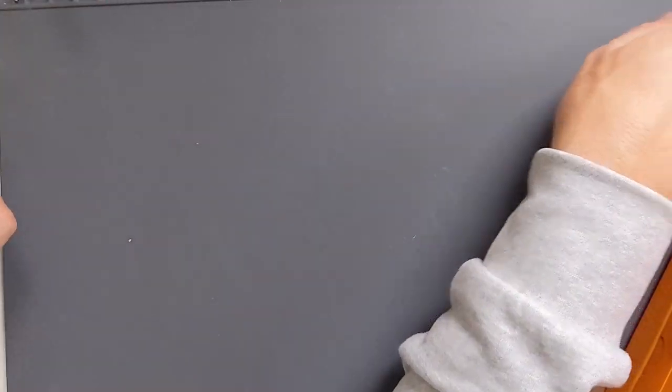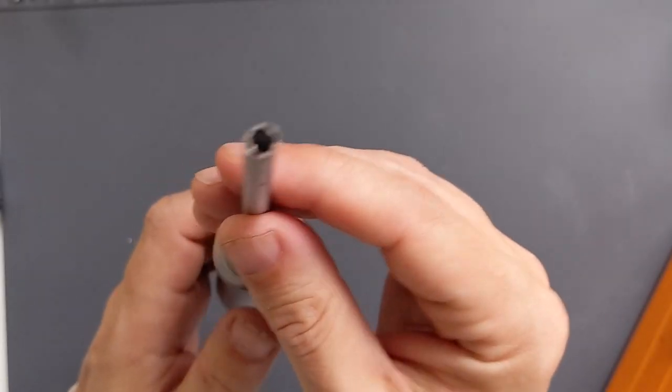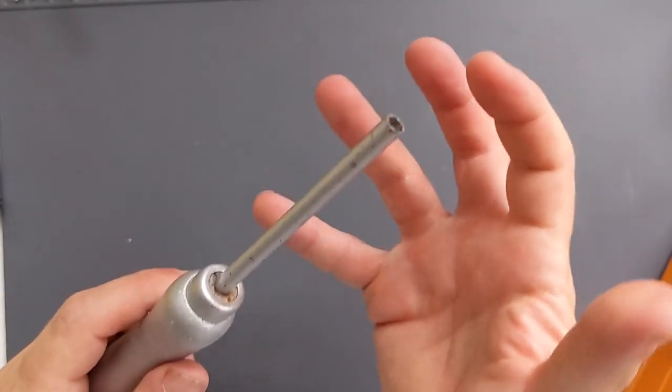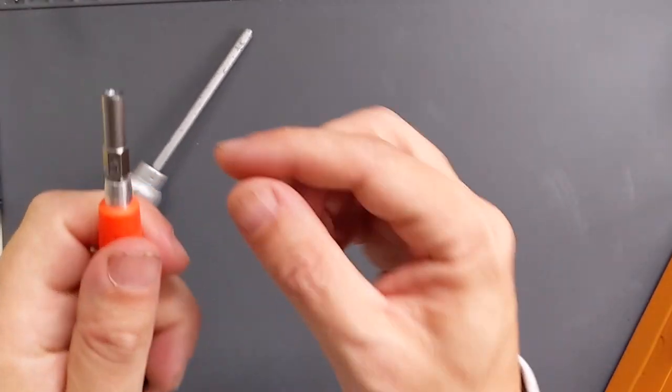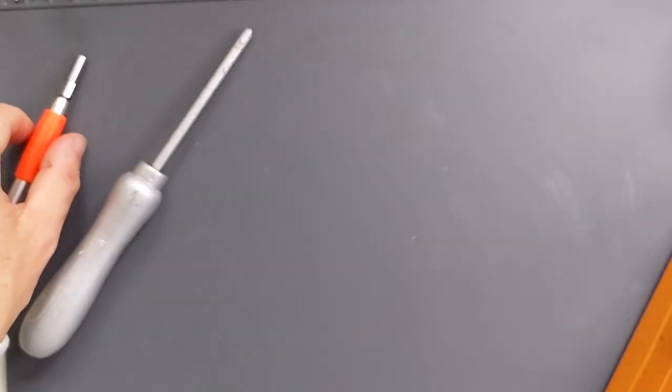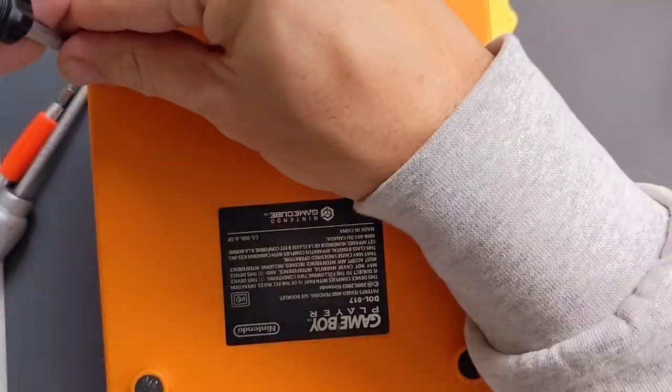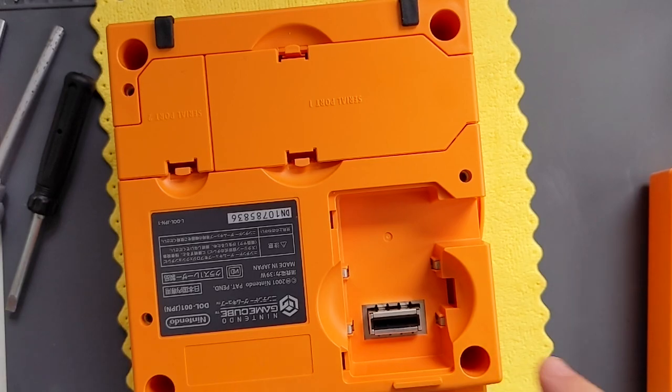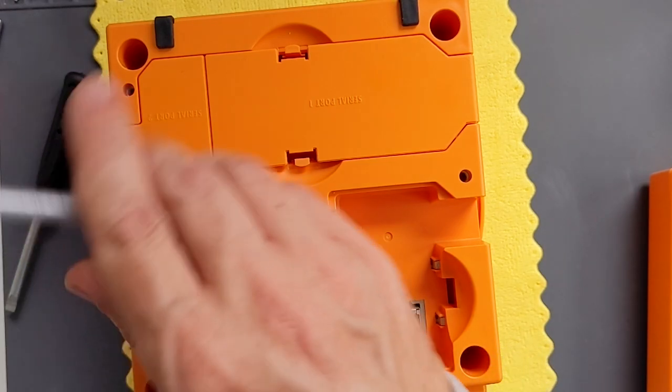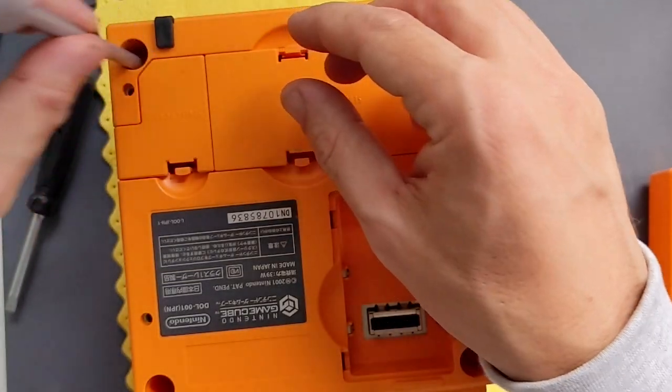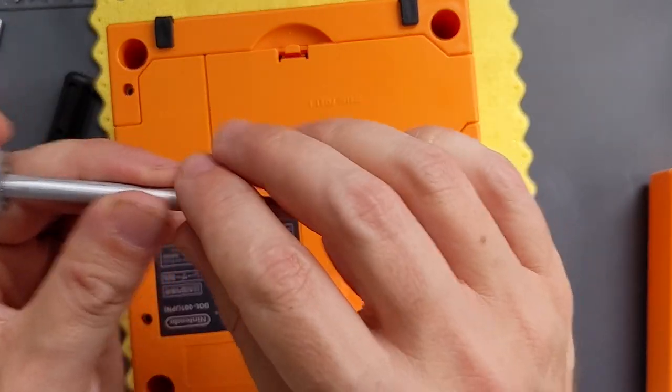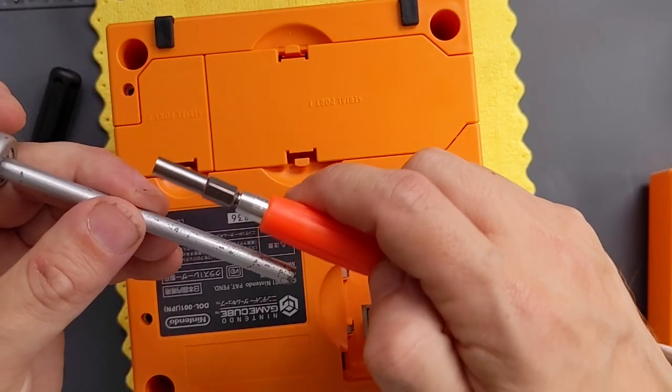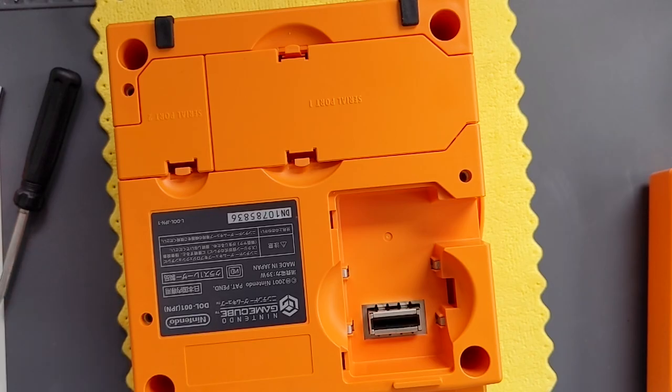So first I need to open up the console so I will also need my Gamebit driver. Again as we've discussed with the Gamecube before you can buy a lot of these online but a lot of the time the shaft is a little bit short and on the Gamecube itself. Now once that's removed you'll see that the screws are quite far down. It goes about that far in so you need a decent size for that and with these they're a little bit short. See how you go with that and good luck.